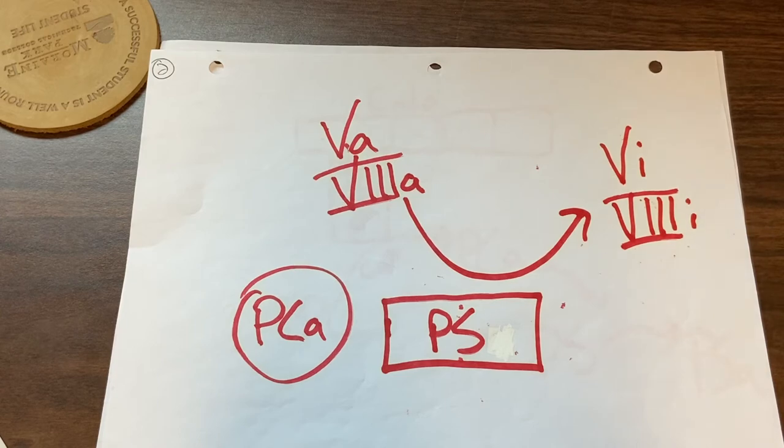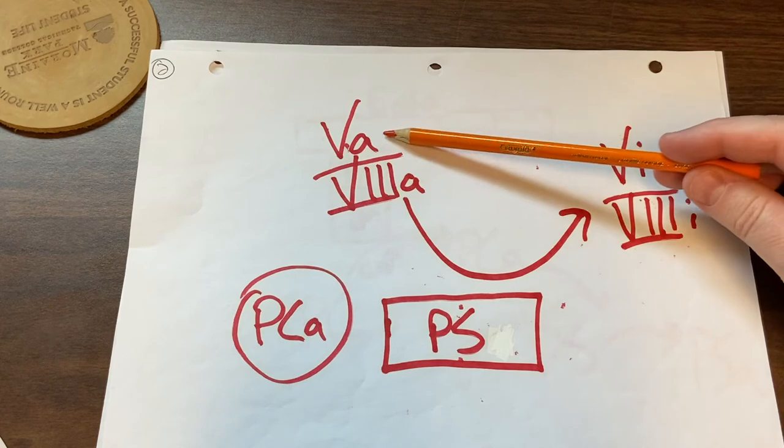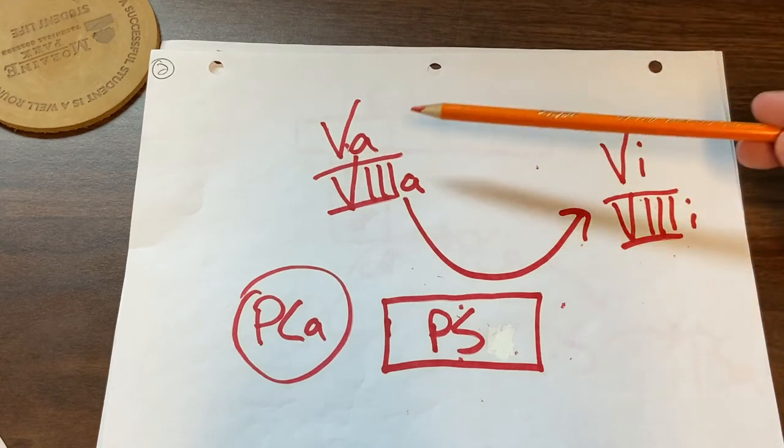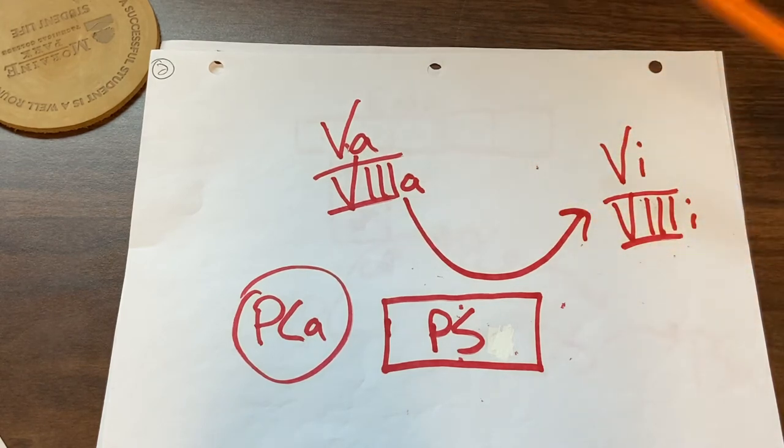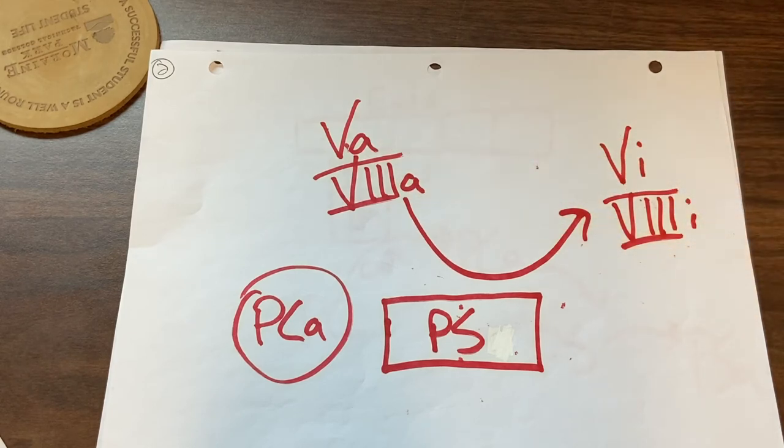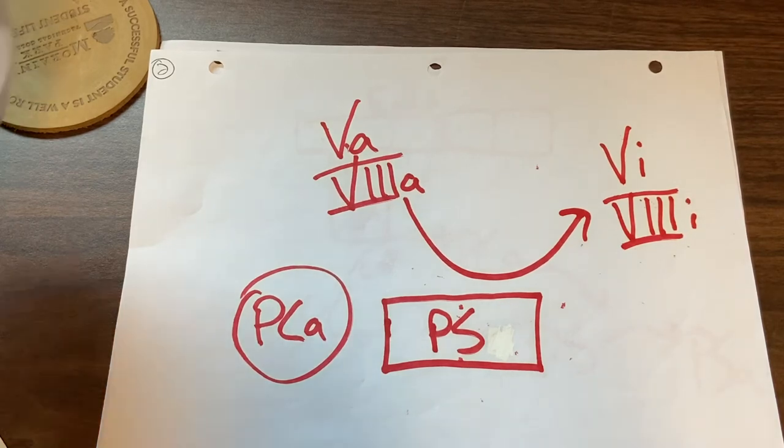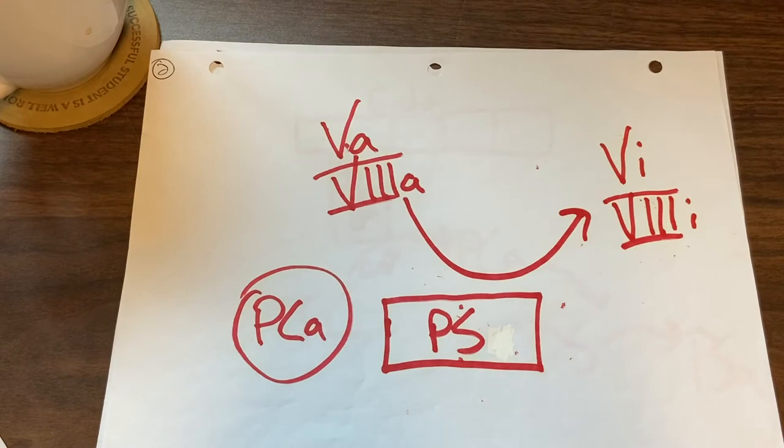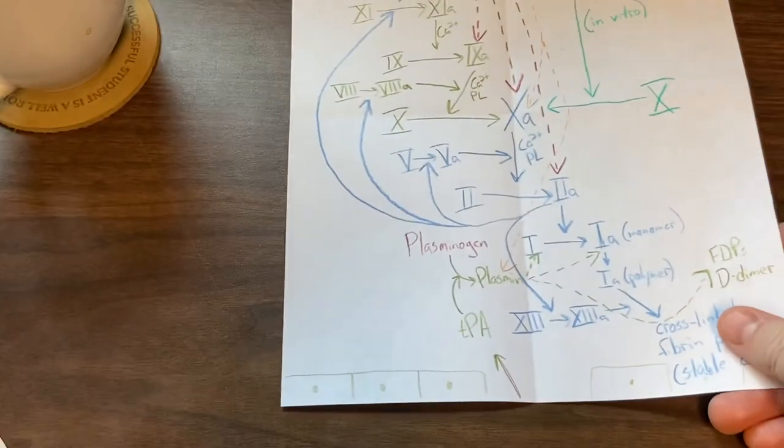Particularly those of northern European descent. In fact, I'm guessing that at least one of us in our classroom is positive for factor 5 Leiden. We don't show signs and symptoms until we show signs and symptoms. You don't know that you had a blood clot until you have a blood clot, so that is kind of an issue here. Let me just draw that on our page now.